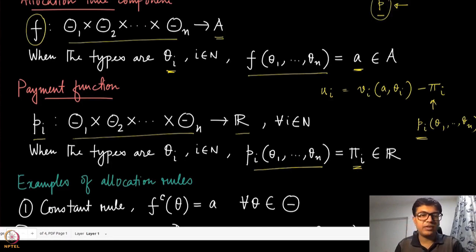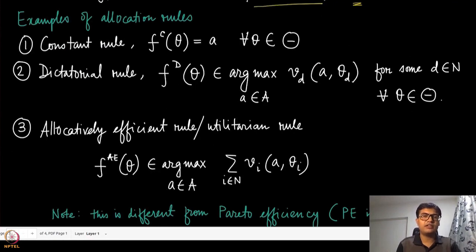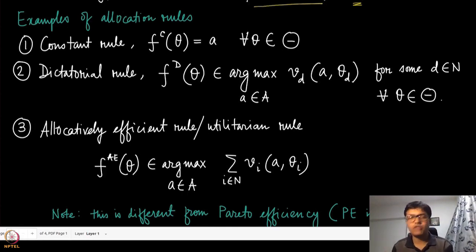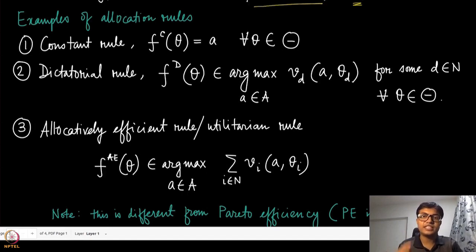Let us look at some allocation rules. One straightforward and not very interesting allocation rule is the constant allocation rule — no matter what the agents choose, you pick allocation A, completely agnostic about the agents' types. The second rule is known as the dictatorial rule: we identify a specific player as the dictator and pick the alternative that maximizes its valuation, ignoring the types of all other players.